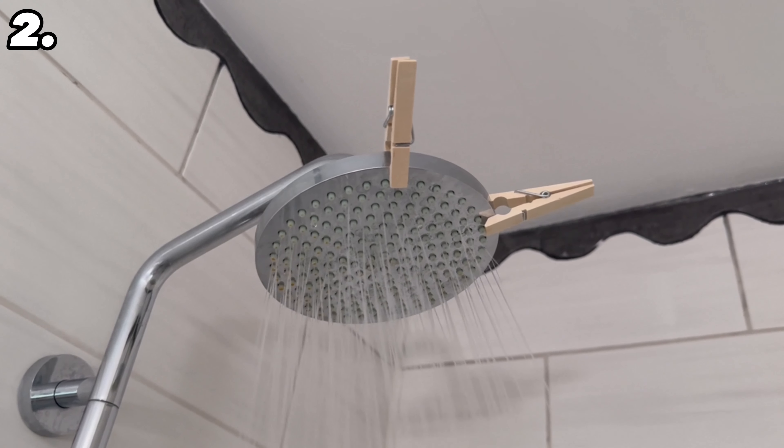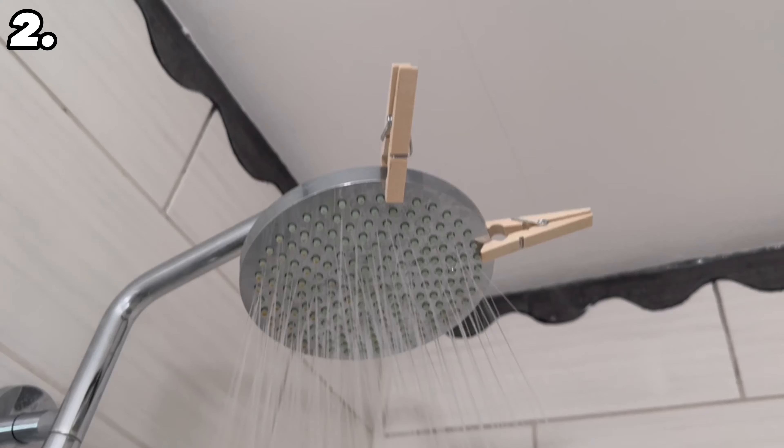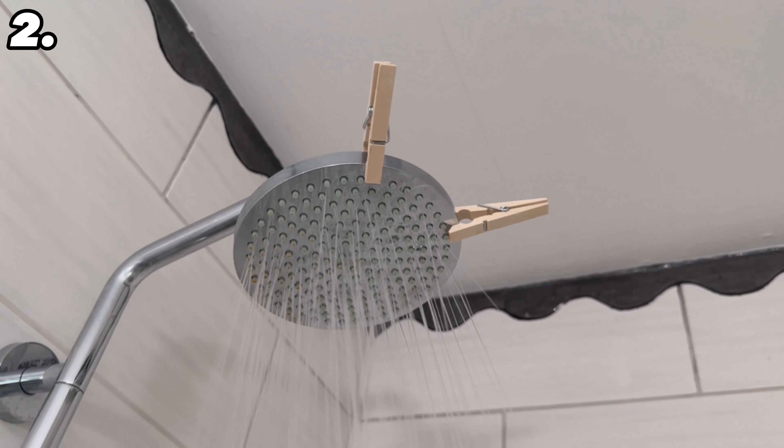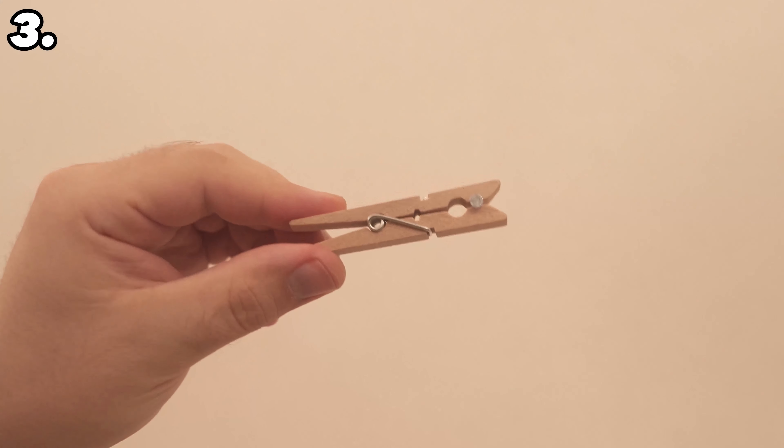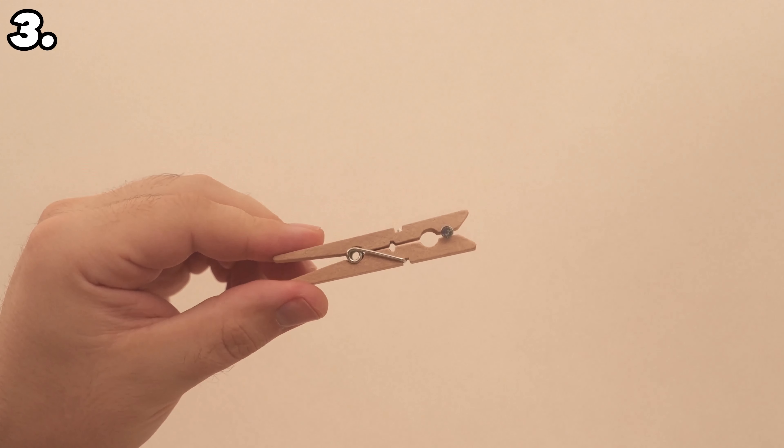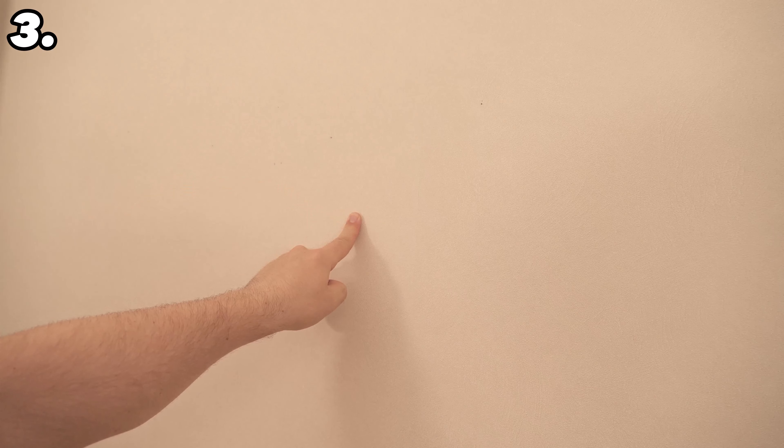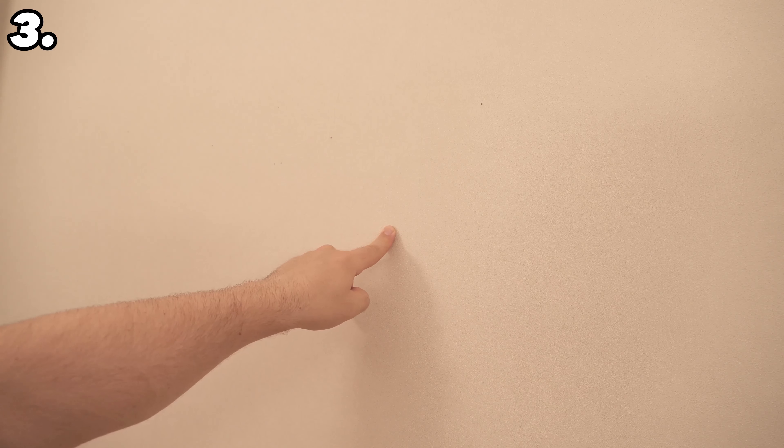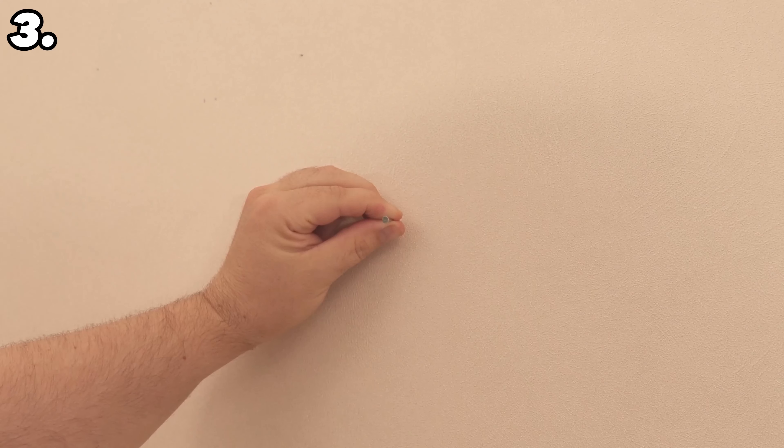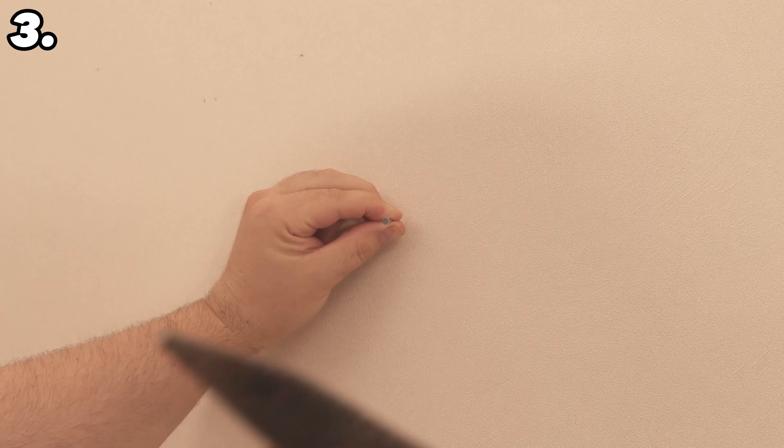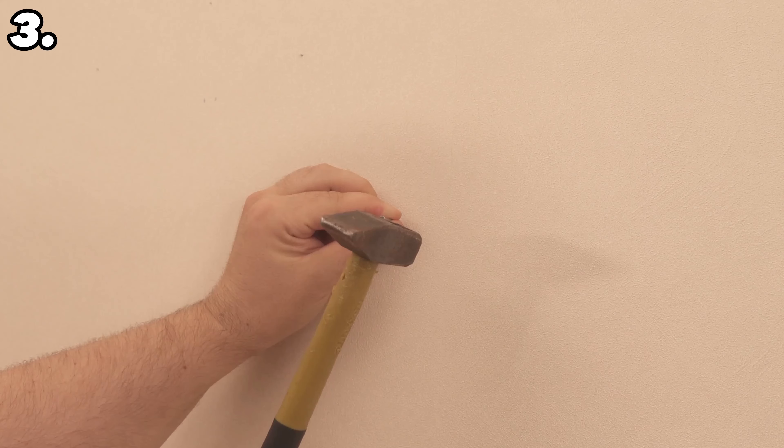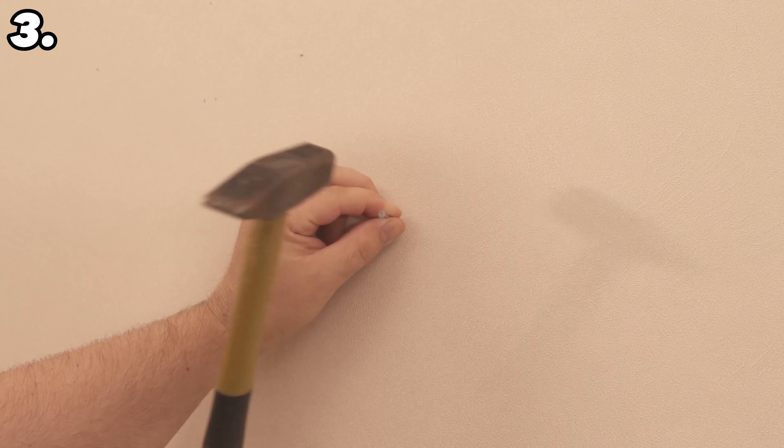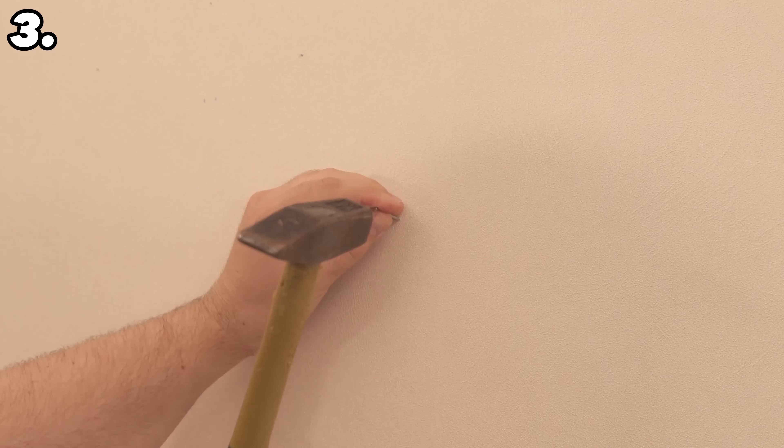This brings us directly to the third trick with clothespins. You should use a clothespin if you want to hammer a nail into the wall. You probably know the problem too. You choose the place where you want to hammer the nail in, grab a hammer, hold the nail firmly and hammer away. However, you may end up hitting your fingers in the process. This is exactly when a conventional clothespin can actually help you.